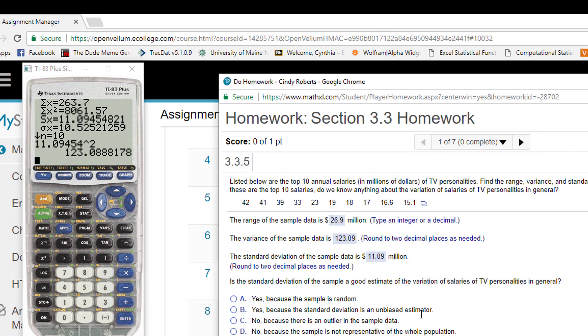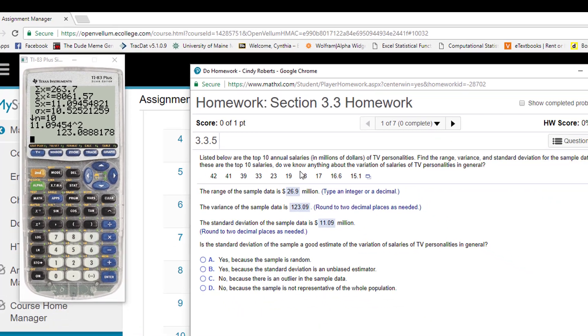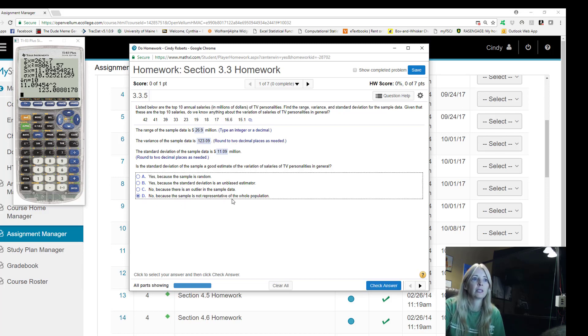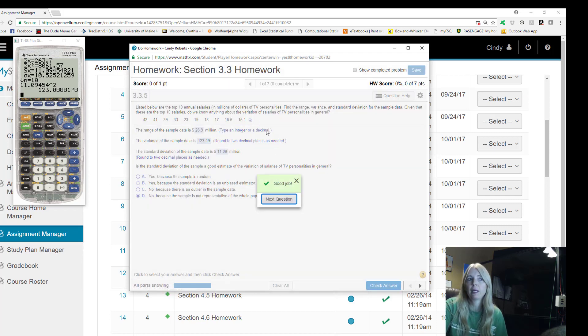The standard deviation—that's the standard deviation of the sample, a good estimate of the variation of salaries. This is the same thing. Again, all they're doing is giving the top annual salaries, so it's probably not a very good indicator because this isn't the entire population. It's just simply the top salaries.